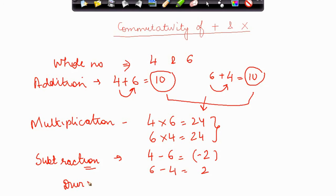Similarly, for division also, as we had discussed earlier, 4 by 6 is not equal to 6 by 4. 4 by 6 is what? This is equal to basically 2 by 3, and this is equal to 3 by 2. So again, commutativity does not apply for division as well.